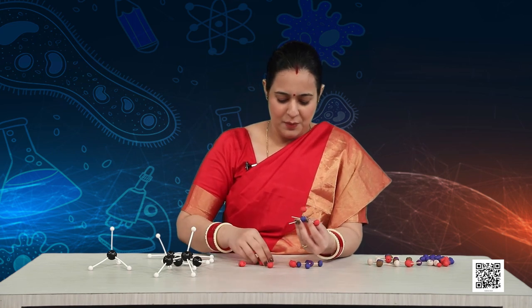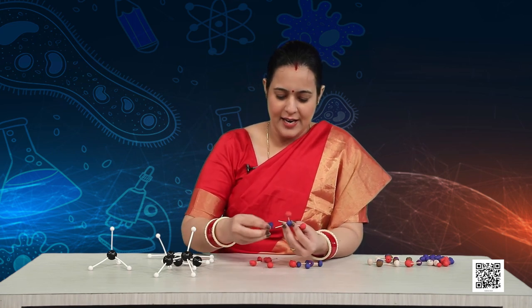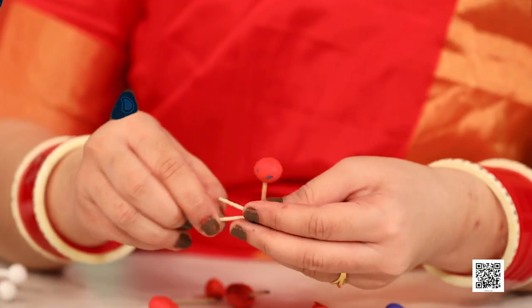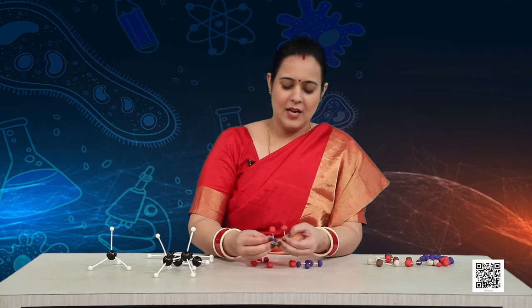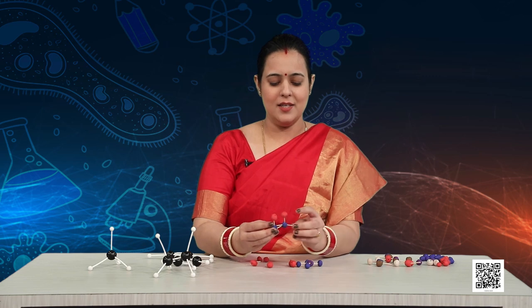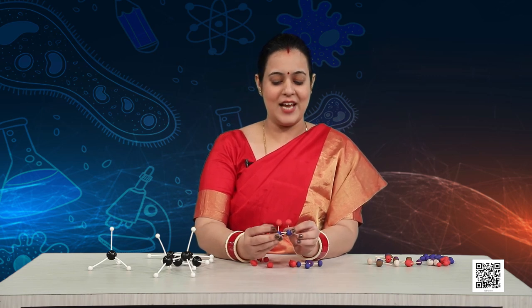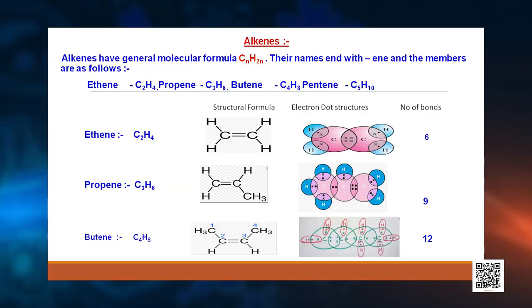When you count the total number of bonds in ethene: 1, 2, 3, 4, 5 and 6 — so ethene has 6 total covalent bonds. Please have a look on the screen to complete the entire table for alkenes, and draw electron dot structures as discussed before.